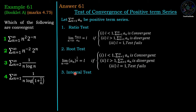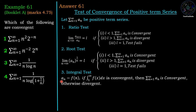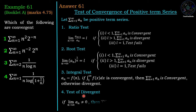Integral test: in the integral test we assume a_n is equal to f(n) where f is a function of n. If the improper integral from 1 to infinity of f(x) dx is convergent then the series is convergent, otherwise the series is divergent. Test of divergence: if limit n tends to infinity a_n is not equal to 0, i.e. if the nth term has a non-zero limit then the series is divergent.